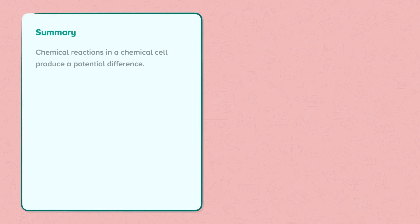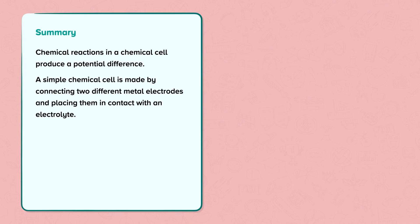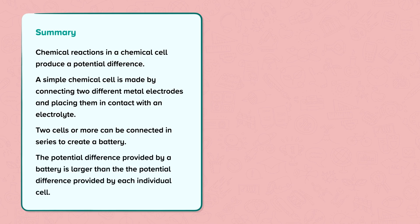To summarise: chemical reactions in a chemical cell produce a potential difference. A simple chemical cell is made by connecting two different metal electrodes and placing them in contact with an electrolyte. Two or more cells can be connected in series to create a battery. The potential difference provided by a battery is larger than the potential difference provided by each individual cell.